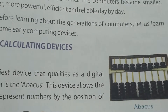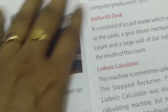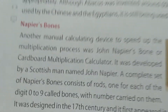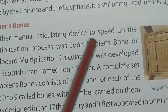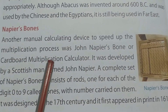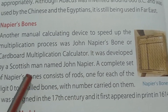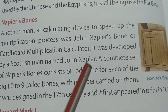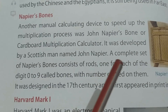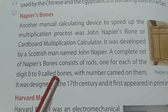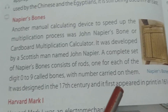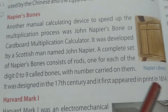Moving on to the next early calculating device: Napier's Bone. Another manual calculating device to speed up the multiplication process was John Napier's Bone, or cardboard multiplication calculator. It was developed by a Scottish man named John Napier. A complete set of Napier's Bones consists of rods, one for each of the digits 0 to 9, called bones with numbers carried on them. It was designed in the 17th century and first appeared in print in 1614.